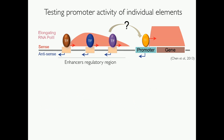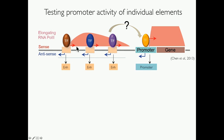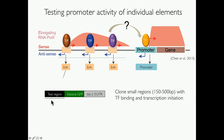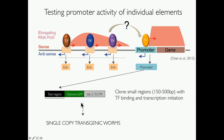First, we assigned enhancers to their promoters by looking at the levels of RNA-Pol2 elongation on the same strand and on the same gene. Then once we assigned the enhancers to their promoters, we picked individual elements — whether they were enhancers or promoters — and cloned them in front of a GFP reporter to see whether they would be able to activate our reporter.